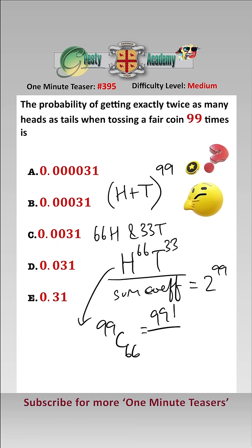Which is 99 factorial over 33 factorial, 66 factorial, and then times that by 1 over 2 to the 99.